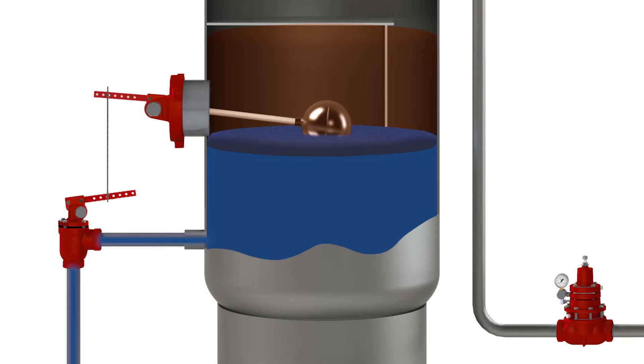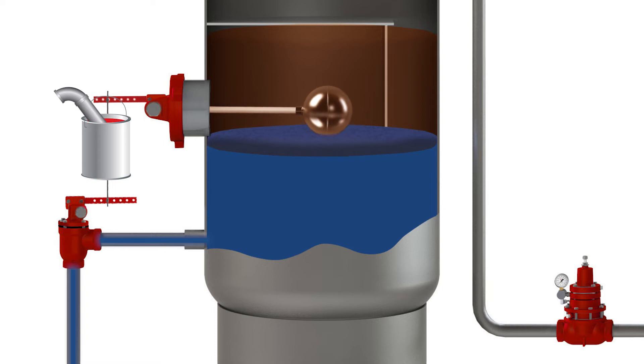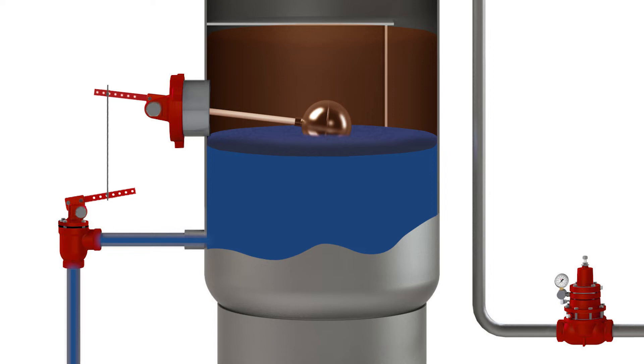To adjust for this, some operators use random items around their site to hold the float up. Adding this weight on the arm makes the float more buoyant to deal with changing density, but this trial and error method is inefficient and hard to repeat.